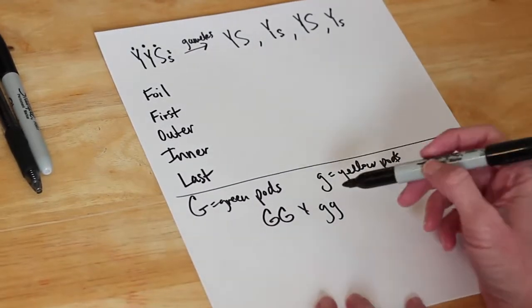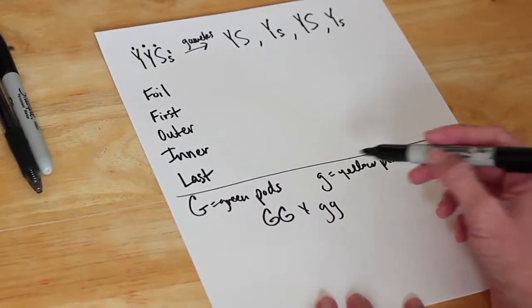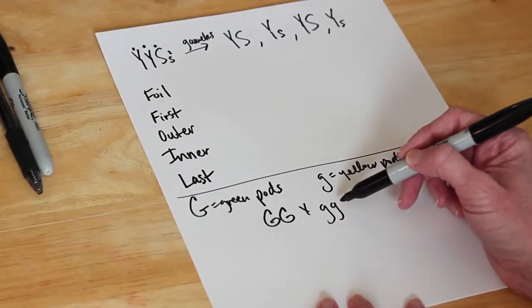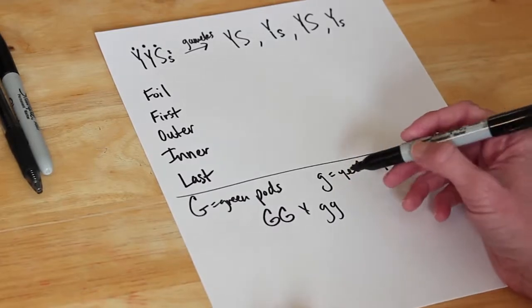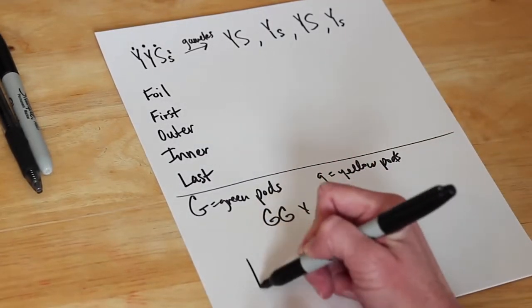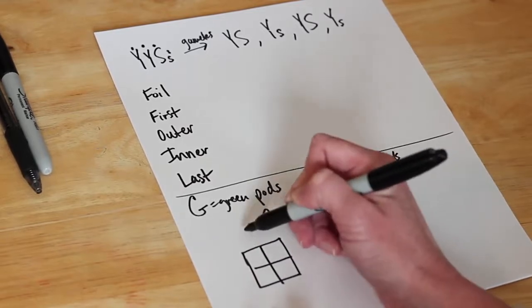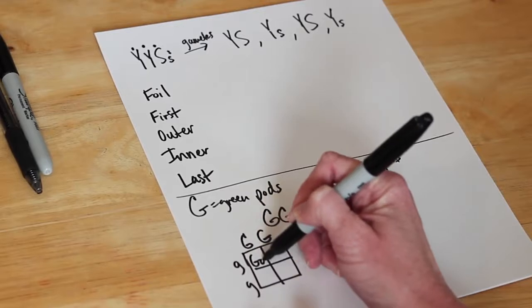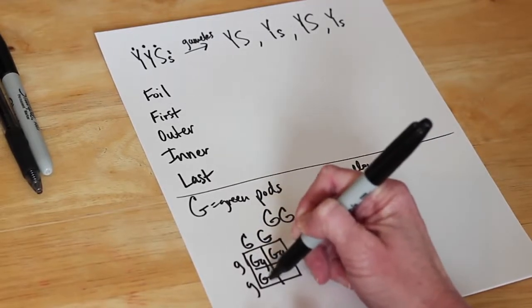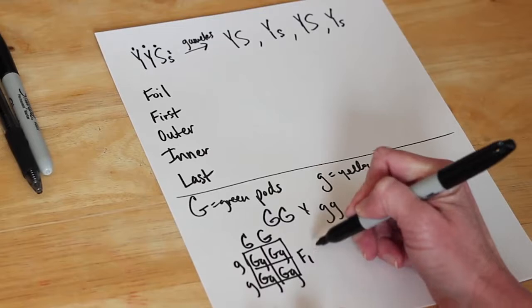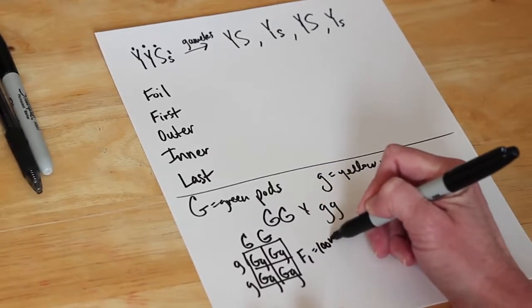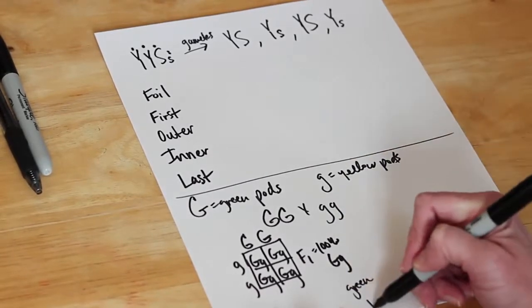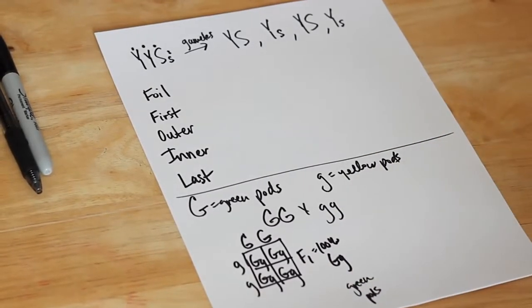You can probably determine the answer without even doing a Punnett square, because the only alleles the dominant parent can offer are big G, and the only gametes the recessive parent can offer are little g. But we can still set up the Punnett square: big G, big G for one parent and little g, little g for the other. So 100% of the F1 generation are big G, little g — and phenotypically, they all have green pods.